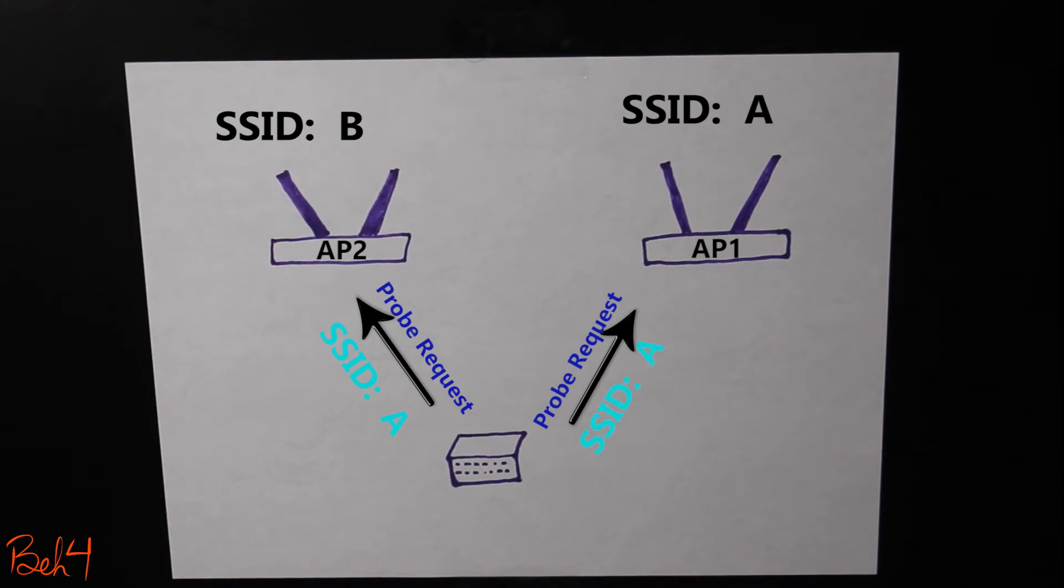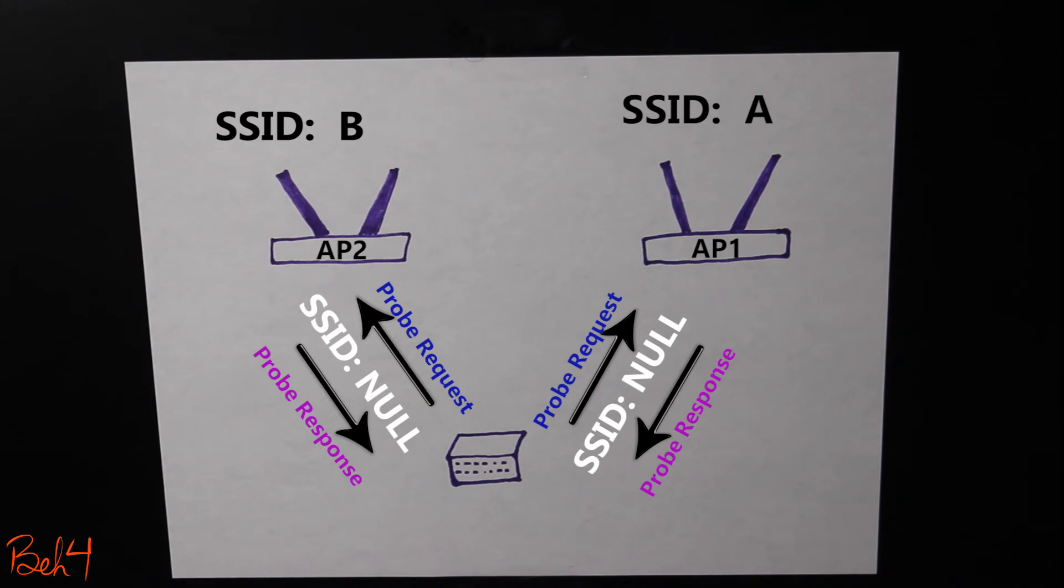If there is a specific SSID, then only the access points with the same SSID are going to respond with the probe response frame. If the SSID field is set to null, then all the access points within the client's proximity are going to respond.